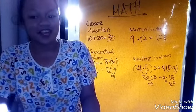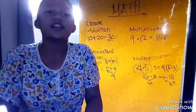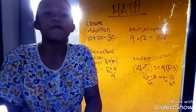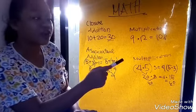Closure property is a set that is closed under operation or collection of operation. It is said to satisfy a closure property. The example of closure property in addition is 10 plus 20 is equal to 30.